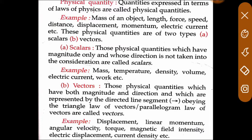A physical quantity is something measured in physics, like the mass of an object, length, force, speed, distance, displacement, momentum, and electric current. These are all physical quantities.